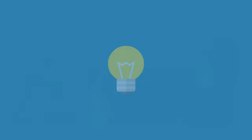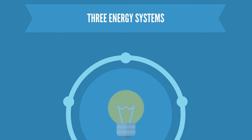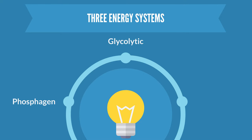To overcome the storage limitation of ATP, at the onset of exercise, our body activates three metabolic pathways that work to continually re-synthesize ATP at its rate of use: the phosphate system, the glycolytic system, and the oxidative system.